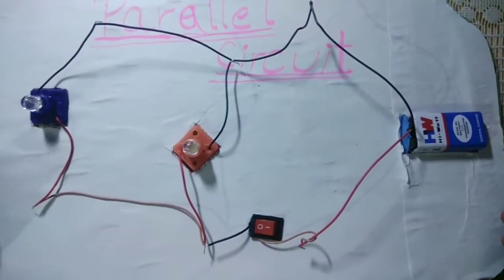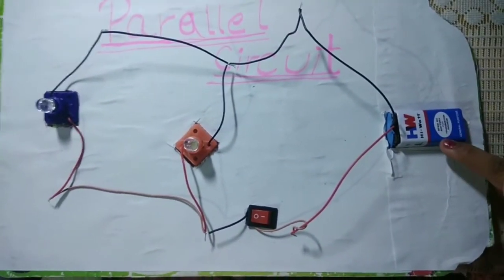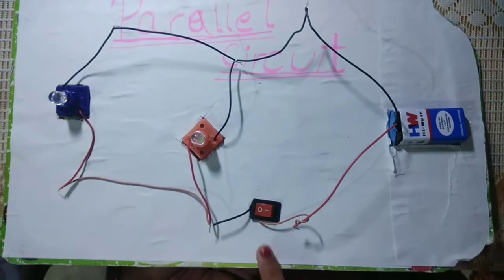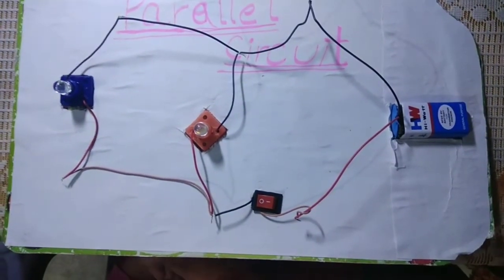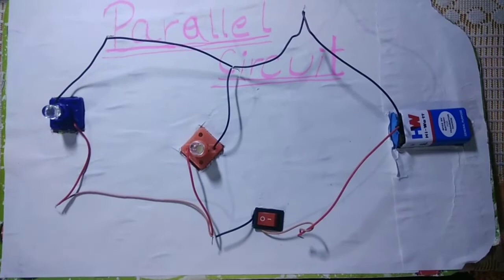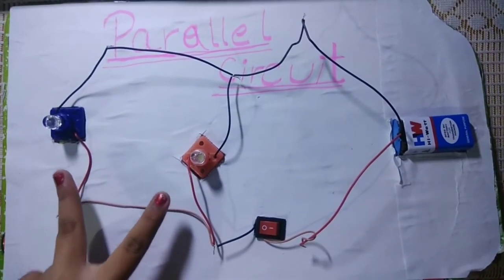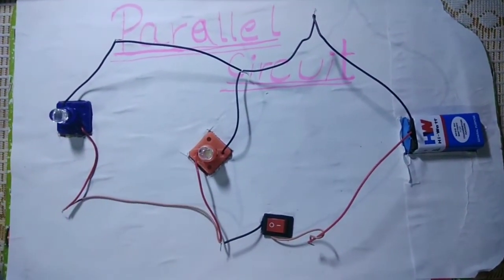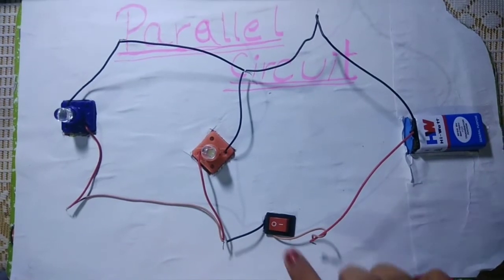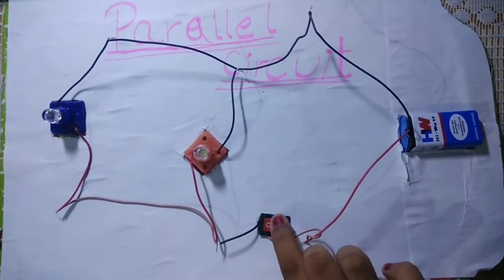This is a parallel circuit. Here I have attached a battery along with a switch through which we can disconnect or connect the circuit. Here I have two LED bulbs attached in parallel. Now let us see whether it works or not.